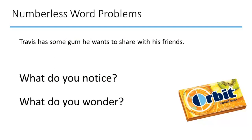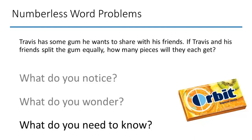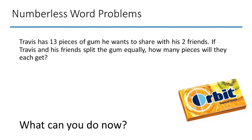Students have an opportunity to write down or talk about what they notice and wonder — 'I wonder how many pieces he has, what flavor it is, how many friends does he have?' Then the teacher gives a bit more information: 'If Travis and his friends split the gum equally, how many pieces will they each get?' Students had a chance to ask their own questions; now I'm moving them toward a specific question. What do you need to know? Does it have to be division? Maybe not.